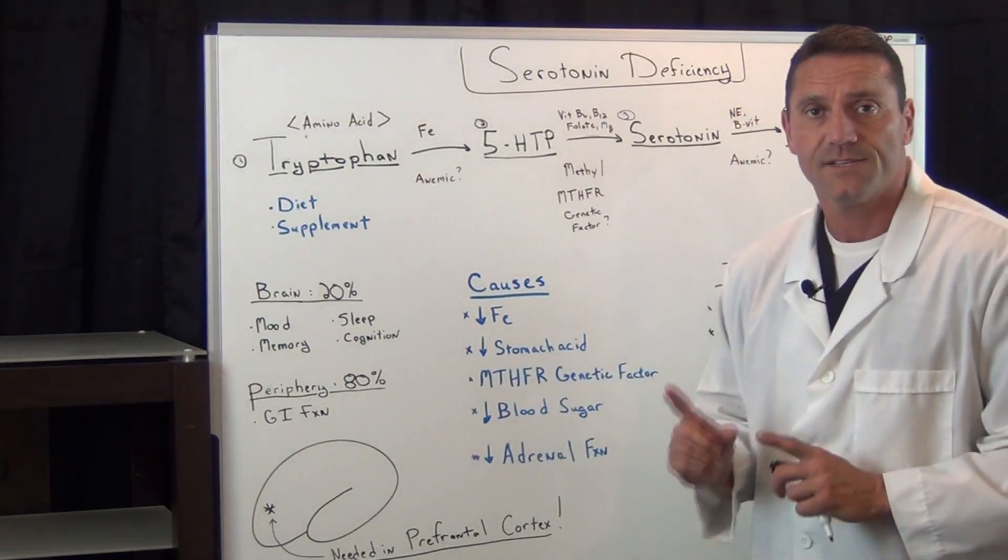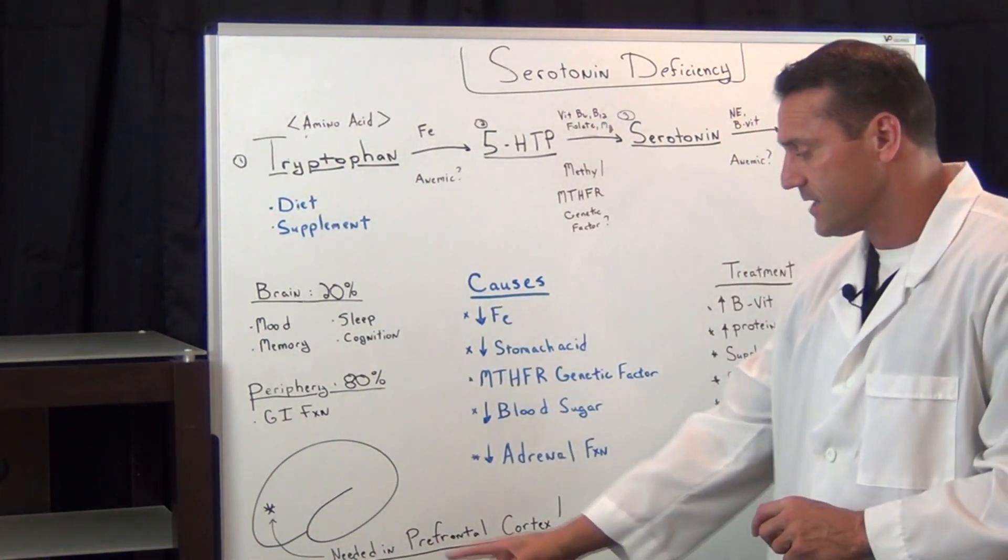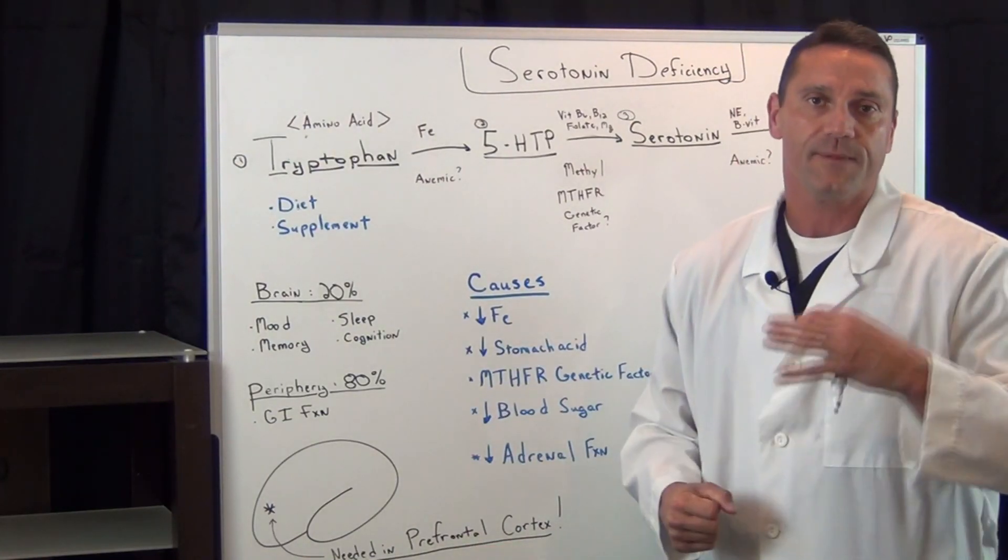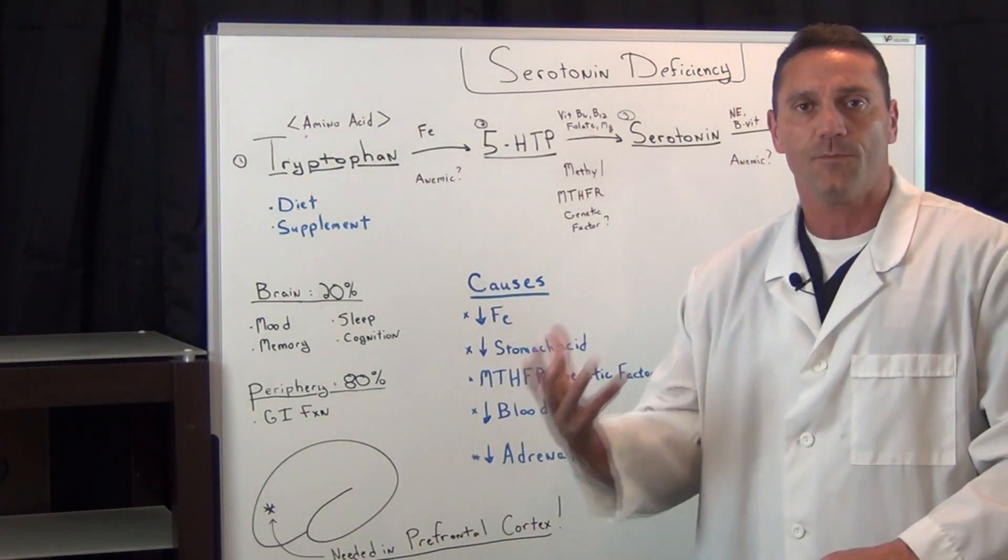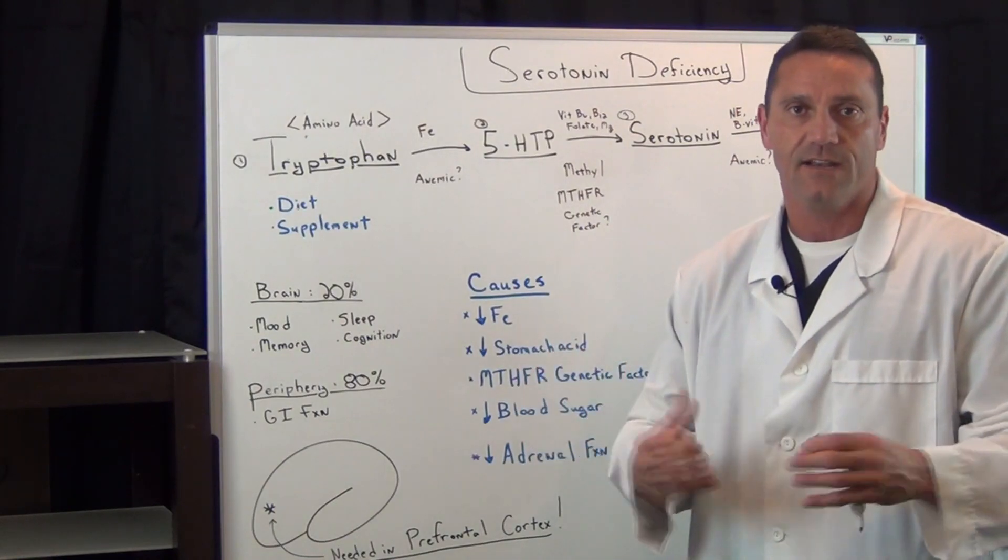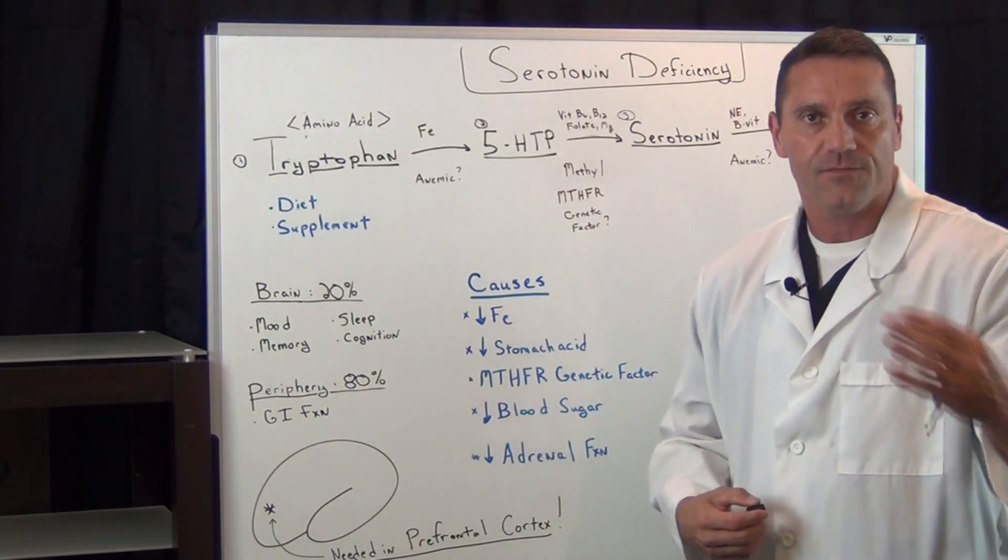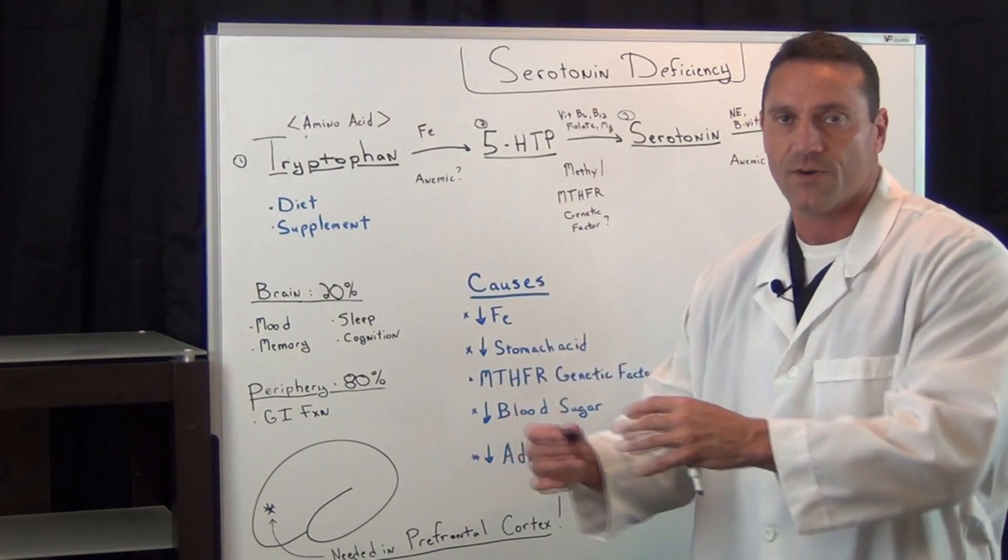Now, again, serotonin is a very important neurotransmitter because it's needed in the prefrontal cortex. We talk about serotonin, and I made another video about dopamine. Those two are hand in hand. Dopamine is more for the motivation. Serotonin is more inhibitory.